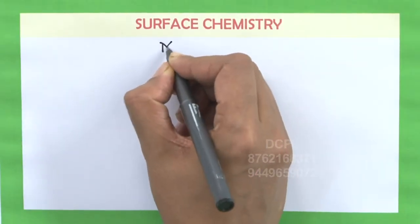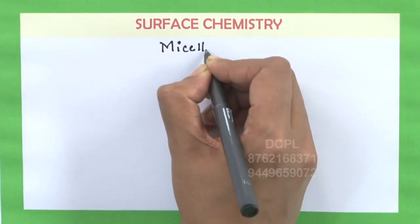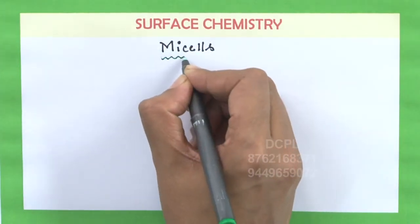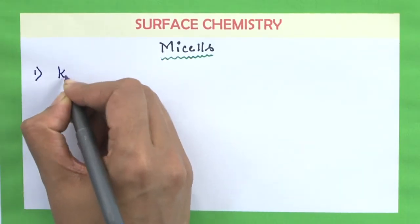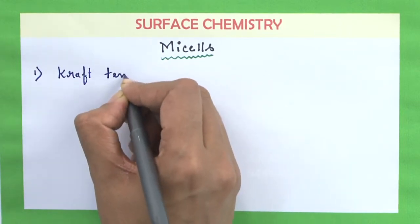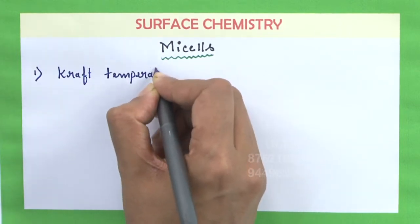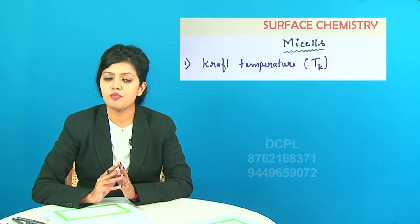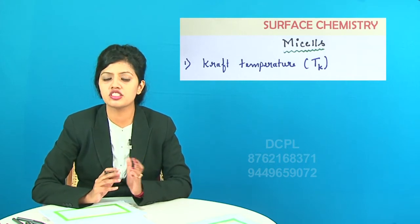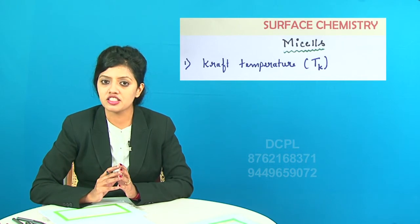Let us discuss about micelles. Micelles are generally known as aggregation of particles. Formation of micelles takes place above a particular temperature which is known as Kraft temperature, denoted as TK. Secondly, the formation of micelles also takes place above a certain concentration known as Critical Micelle Concentration.